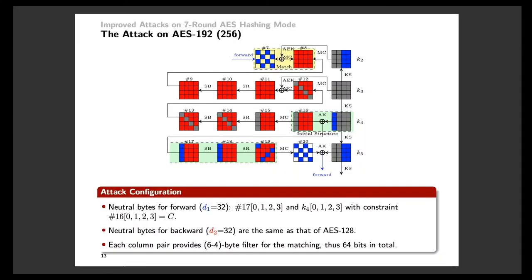The idea of introducing neutral bytes from the key also applies to AES-192 and AES-256. Compared to AES-128, the key schedules of AES-192 and AES-256 have relatively slow diffusion, so it is possible to select more neutral bytes to add more freedom degrees to the forward chunk. The neutral bytes for forward include the first column of state 17 and the first column of K4, with the constraint that their impact on the first column of state 16 is constant, giving freedom degrees of 32 bits.